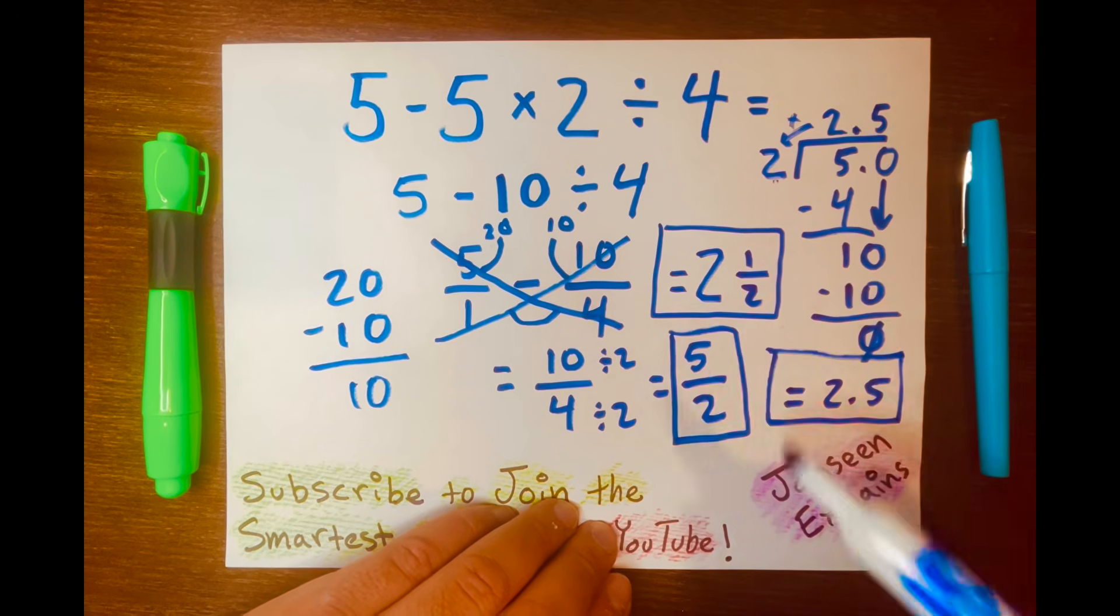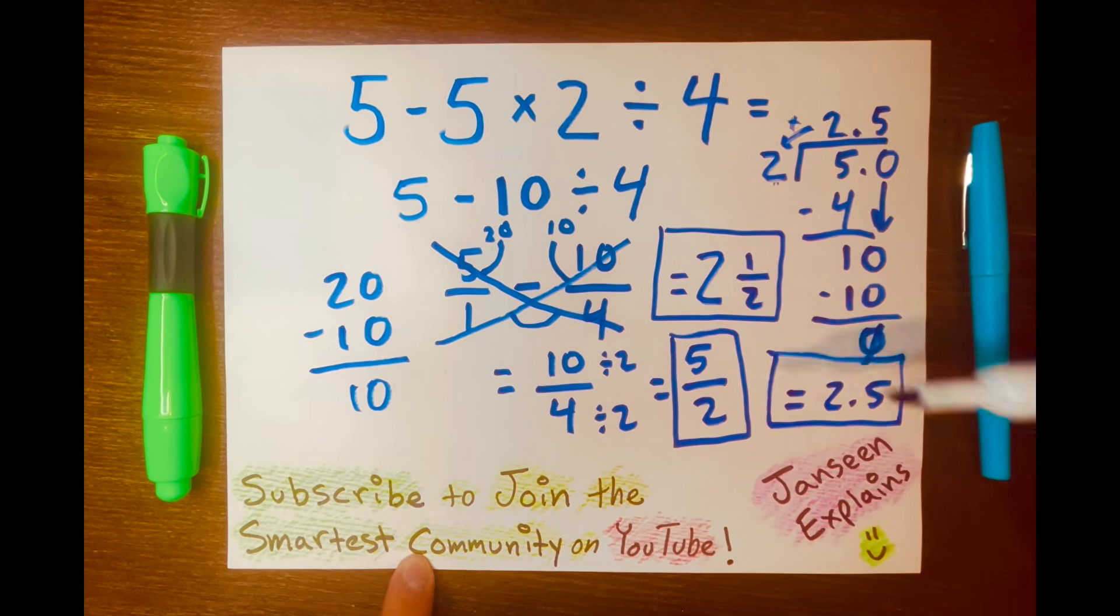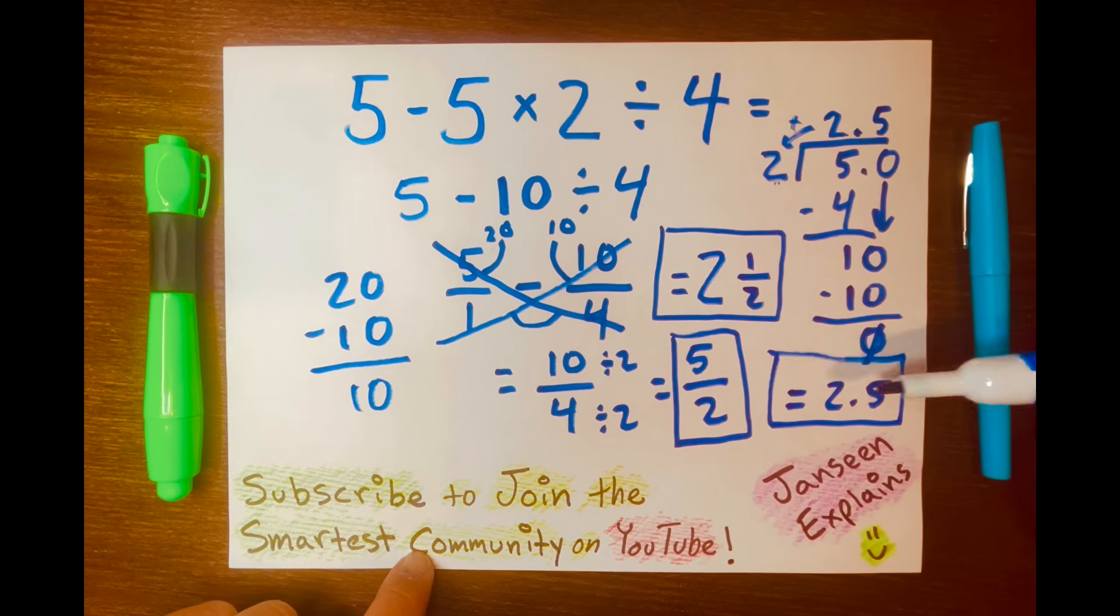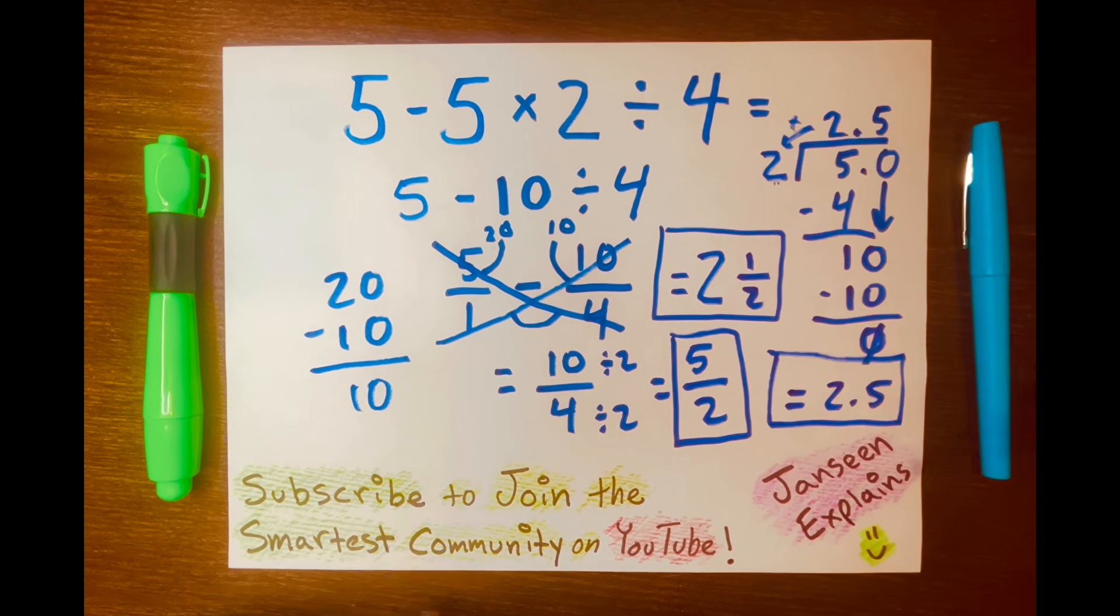Look at that. We have three different answers. 2 and 1/2, 5 over 2, and 2.5. And there you go.